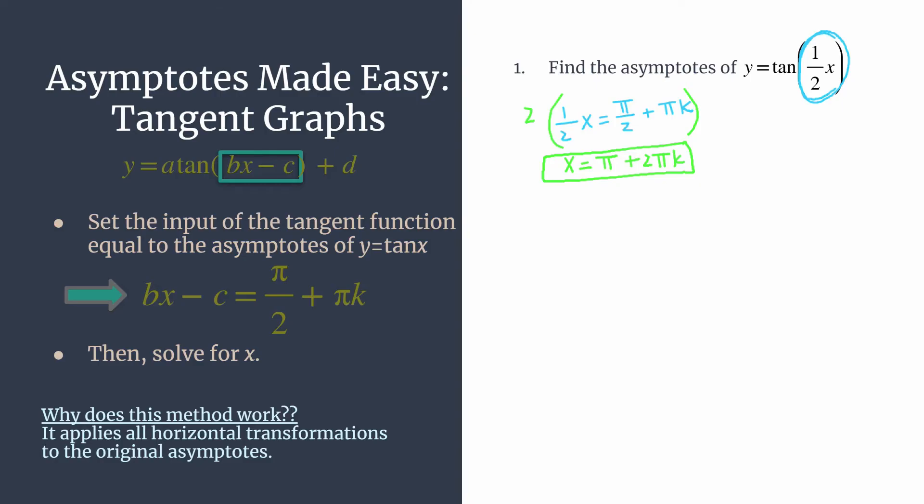You can plug in any integer for k, and that'll develop your asymptotes. So if we let k equal zero, we'll see it's just x equals pi is an asymptote. If you let k be one, you would get your next asymptote to the right at pi plus two pi times one. So your next asymptote would be a period away, two pi away at three pi.